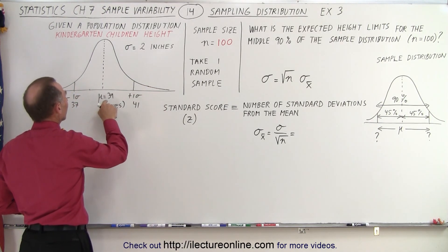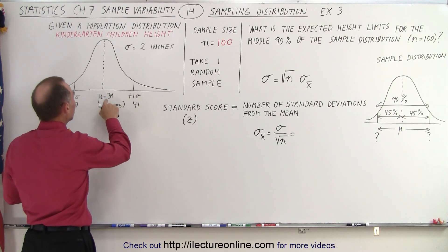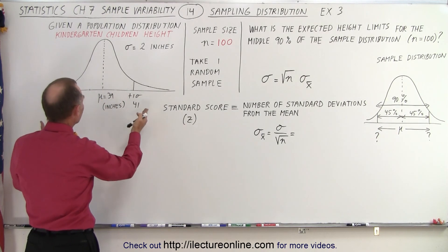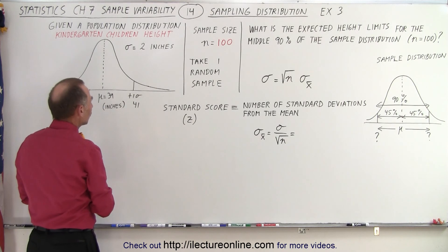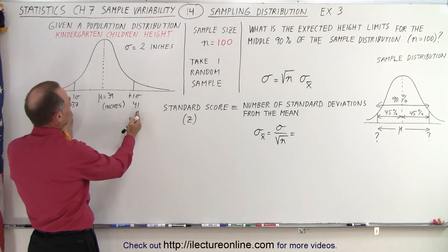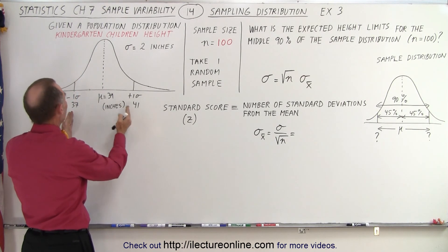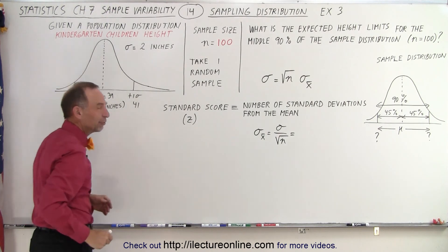Kindergarten children have heights at an average of 39 inches with a standard deviation of plus or minus 2 inches. So that means that about 68% of all kindergarten children will have a height between 37 and 41 inches.